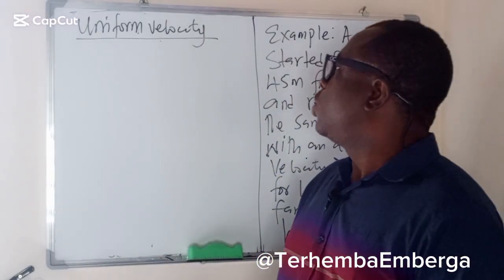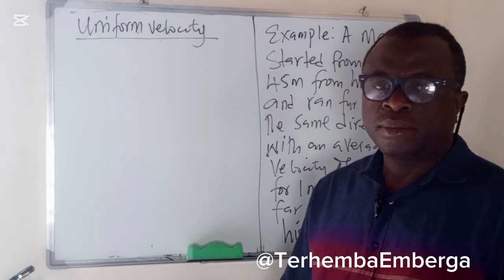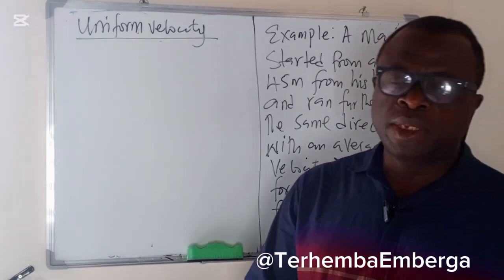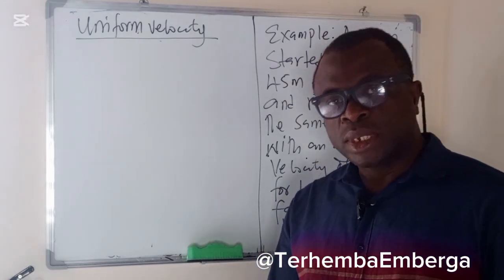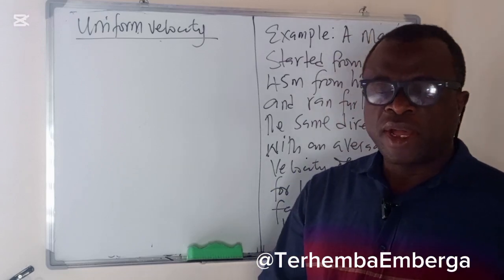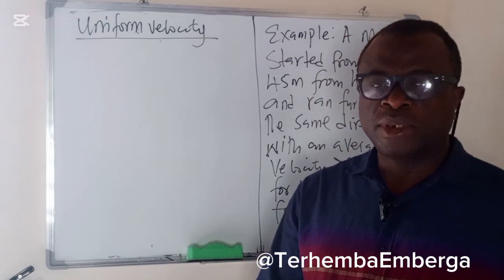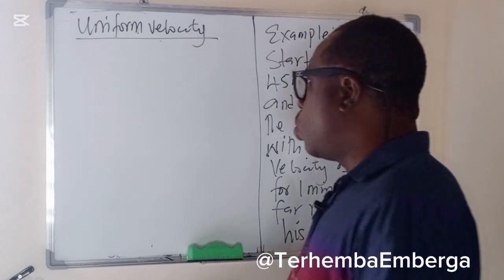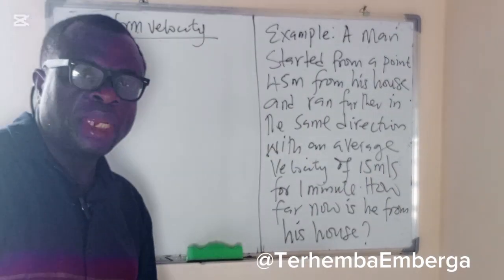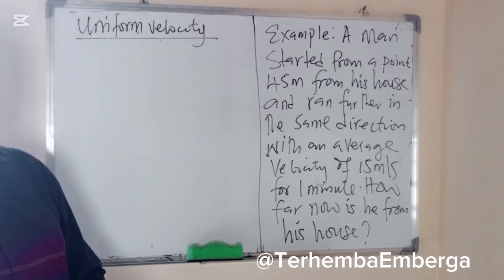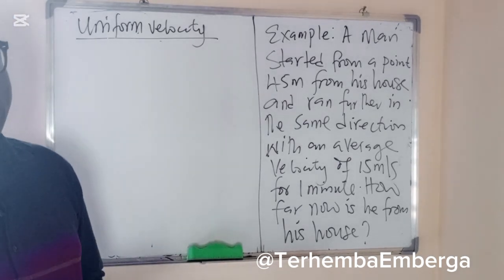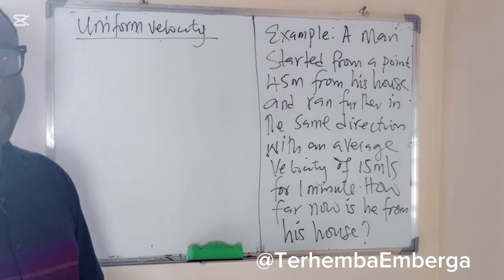Today we'll be looking at uniform velocity. What is velocity? The rate of change of displacement. And what is displacement? The distance covered in a specified direction. So when we say the velocity is uniform, it means that the rate of change of displacement is constant with respect to time.